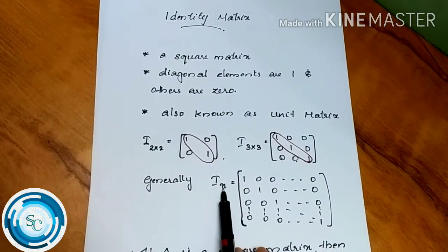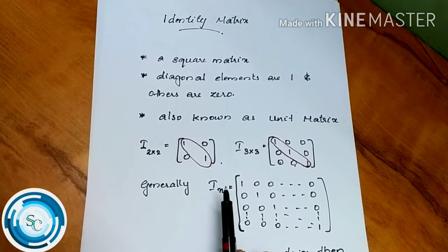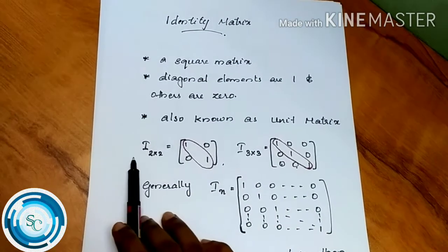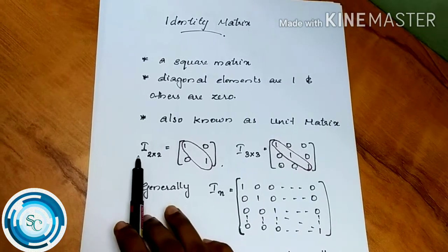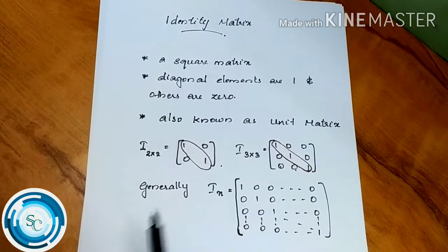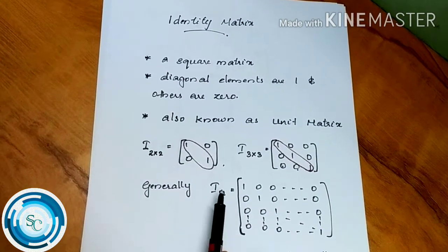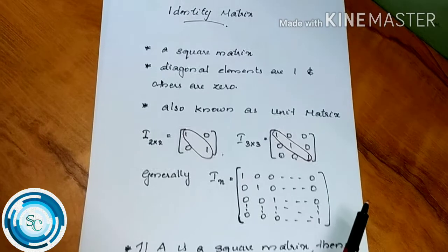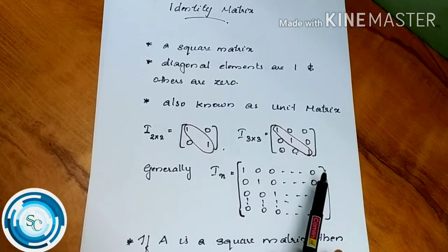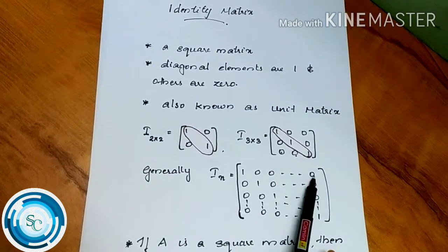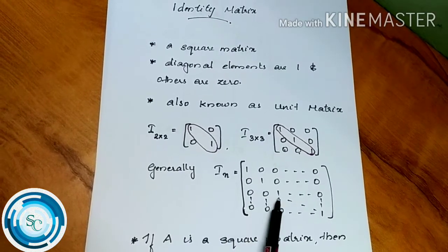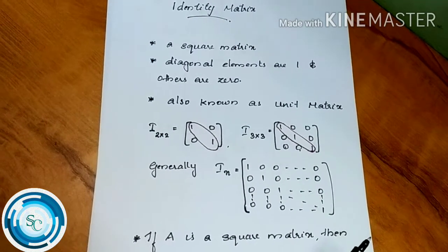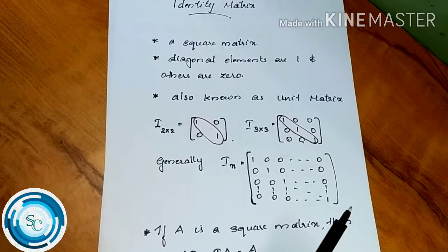When the number of rows equals the number of columns, we use the notation I_n. So we write I_2, I_3, and so on. In general, the identity matrix I_n has 1s on the diagonal and 0s everywhere else.